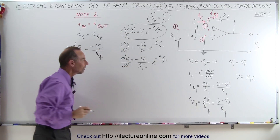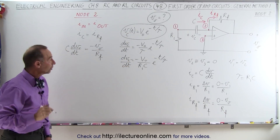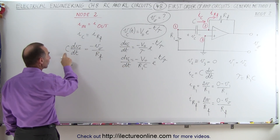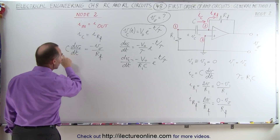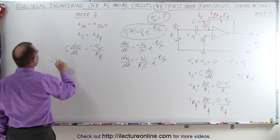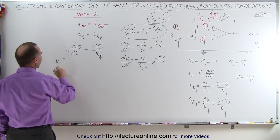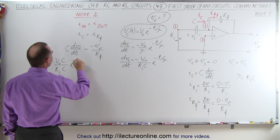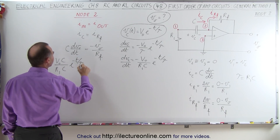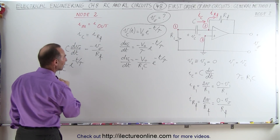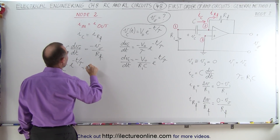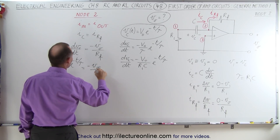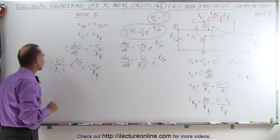So now we plug that in — we have to multiply by C — so we end up with minus v-initial times C, divided by R1 times C, times e to the minus t over tau. And that's going to be equal to the negative of the output voltage divided by the feedback resistance.